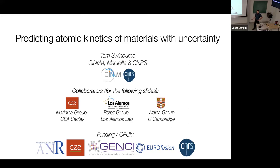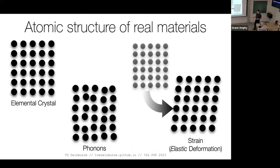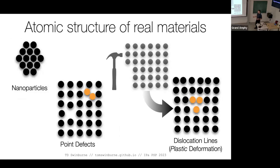I'll try to piggyback on the explanations of the previous talks. I want to give some setting for what we look at and the type of problems you get when simulating materials at scale. You've probably heard of crystal phonons and elastic deformation — these are the simple things. But in reality, the mechanical and electronic properties of materials are really defined by their structure and the defects in that perfect crystalline structure.